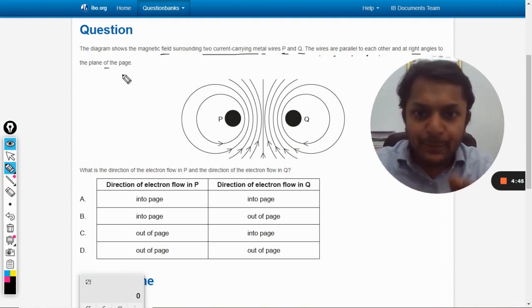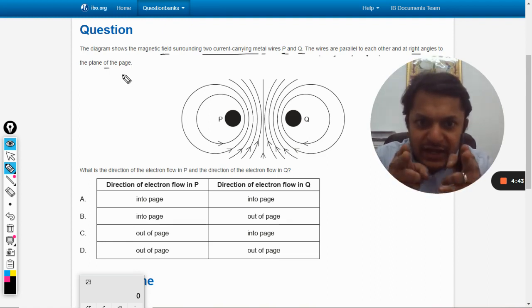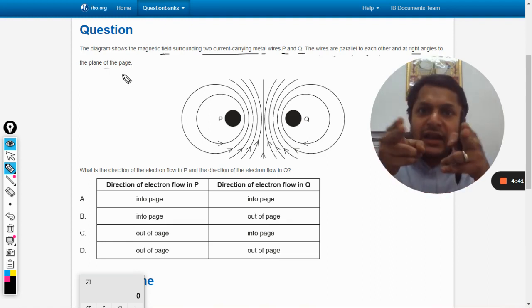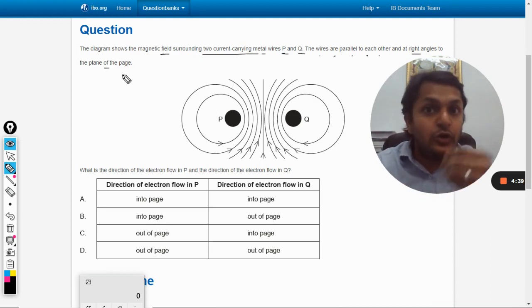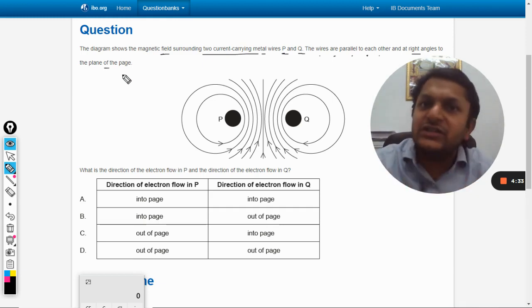So these two wires are passing through these two holes like P and Q and they are entering into the laptop. We don't know if the current is coming out of the laptop or going into the laptop towards the screen. That is what we need to find.